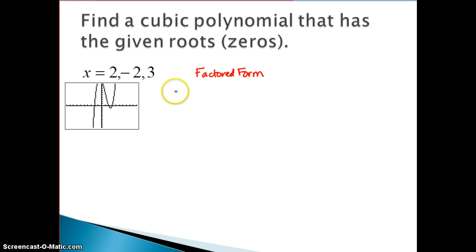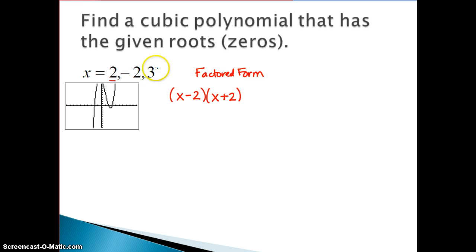Factored form is where you say: if I had x minus 2, that would give me the root, or the zero — remember those are the same things — the zero of positive 2. If I had a negative 2, then I would need x plus 2. And if I have a positive 3, then I would need x minus 3 as my zero. Because they're called zeros or roots, we typically set this equal to 0. So this would be written in factored form.